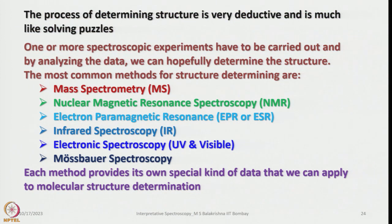The process of determining structure is very deductive and is much like solving puzzles. One or more spectroscopic experiments have to be carried out, and by analyzing the data we can hopefully determine the correct structure. The most common methods for structure determination are mass spectrometry, nuclear magnetic resonance spectroscopy, electron paramagnetic resonance (EPR) or electron spin resonance, infrared spectroscopy, electronic spectroscopy, and Mössbauer spectroscopy. Each method provides its own special kind of data that we can apply to molecular structure determination.